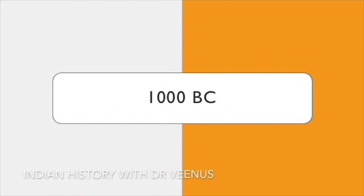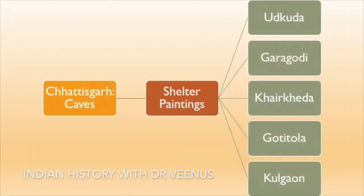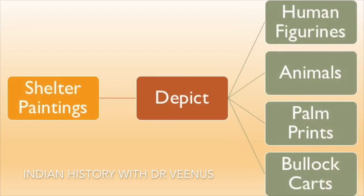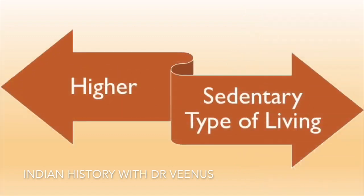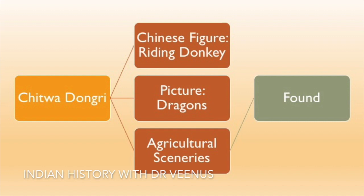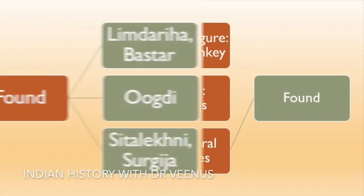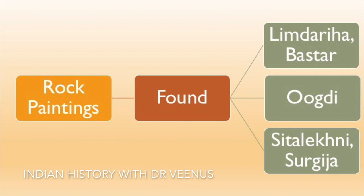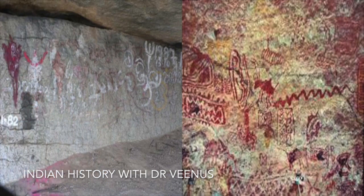Chhattisgarh is also home to variety of caves in the district of Kanker, like the shelters of Uduk, Garagodi, Kherkheda, Gotitola and Kolgaon. These shelters depict human figurines, animals, palm prints, etc., showing a higher and sedentary type of living. Similar paintings can be found in Ghodsar and Kohabor rock art sites in Korea district. In Chitwa Dongri, Chinese figures riding donkeys, dragons, and agricultural sceneries can be found. Rock paintings have also been found in Limdariha in Bastar district, Sitalekha in Surguja district, Gudahandi rock shelter and Yogi Math rock shelter.